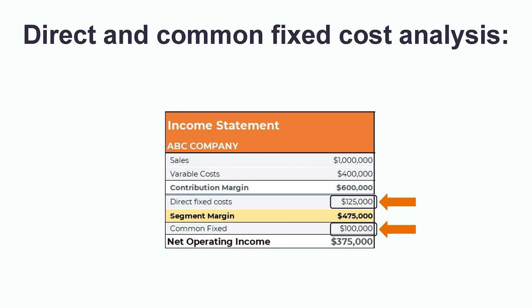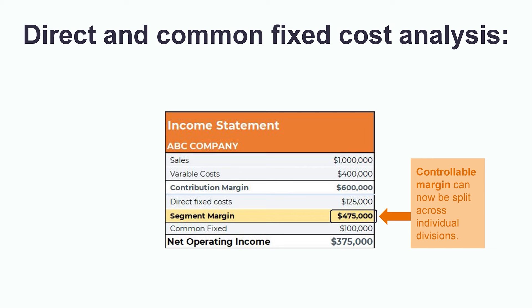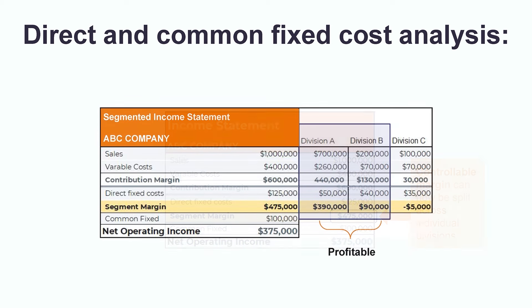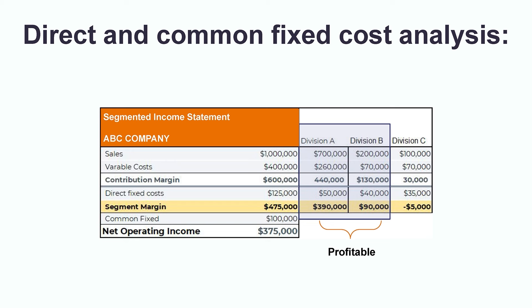What we've done here is remove the fixed costs that are common across all the segments and put them below the margin. This allows the company to come up with the total controllable margin of $475,000, which can now be split up across the individual divisions for performance evaluation purposes. By narrowing in on the individual segment margin for each division, we now have a clear picture of how much each division is contributing to the organization. For each segment, we take sales less variable costs to get a contribution margin, then subtract out the direct fixed costs to get to the segment margin for each division. Division A and Division B are both profitable, contributing $390,000 and $90,000 respectively to the overall controllable margin.